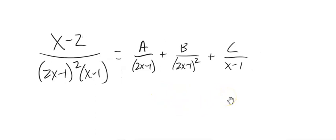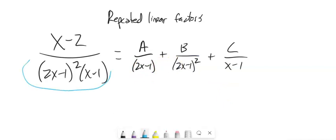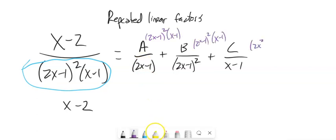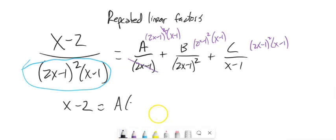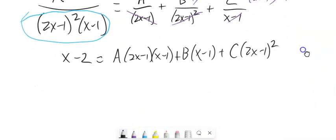This is the repeated linear factors case. We account for both the singular and squared versions of that factor. Multiplying both sides by the full denominator: a gets paired with 2x minus 1 times x minus 1; b gets paired with x minus 1 alone (since the full square cancels); and c gets paired with 2x minus 1 squared.